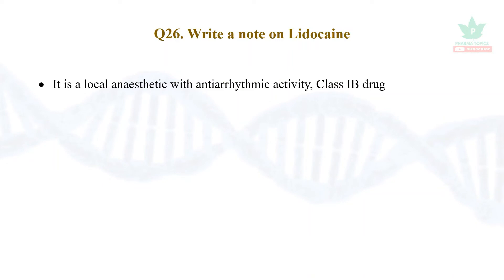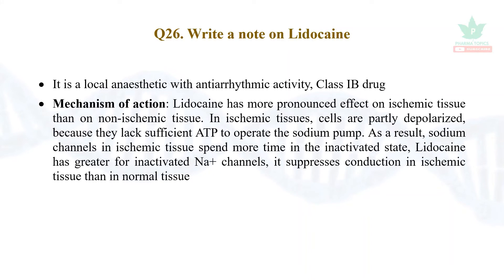The next drug is lidocaine. It is a local anesthetic with anti-arrhythmic properties — a Class 1b anti-arrhythmic drug. Its mechanism: it has more effect on ischemic tissue than non-ischemic tissue. In ischemic tissues, more sodium channels are in the inactivated state because they have less ATP, so those channels are blocked, preventing arrhythmia arising from them.